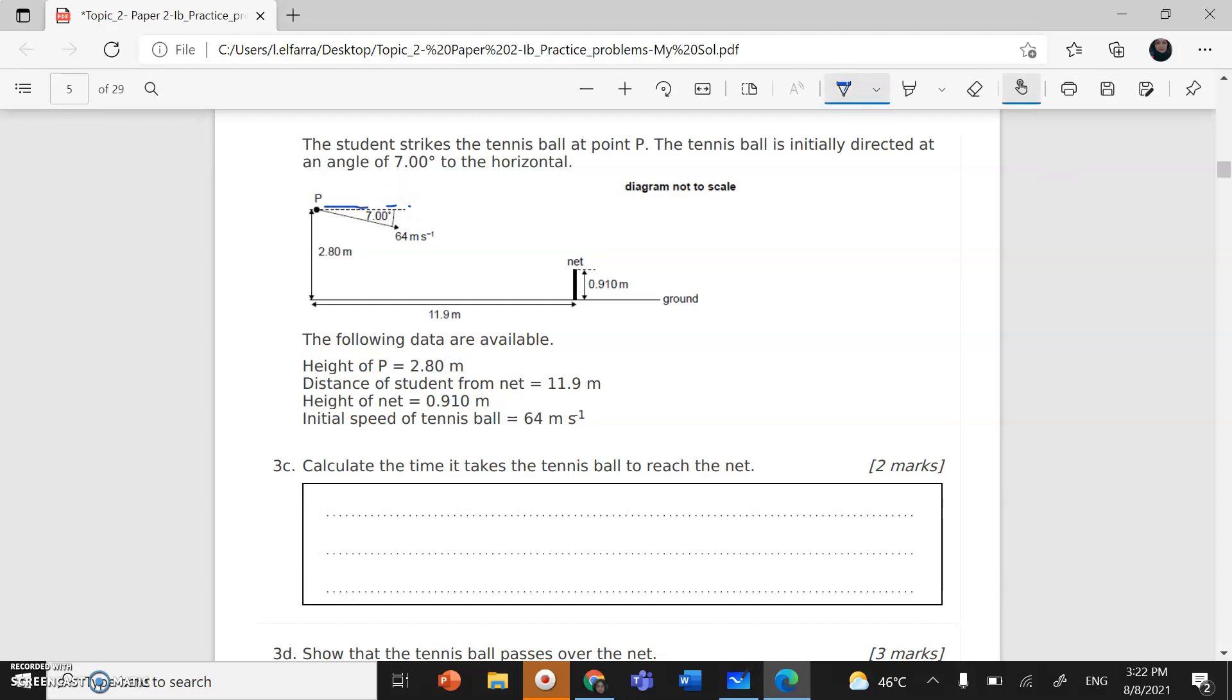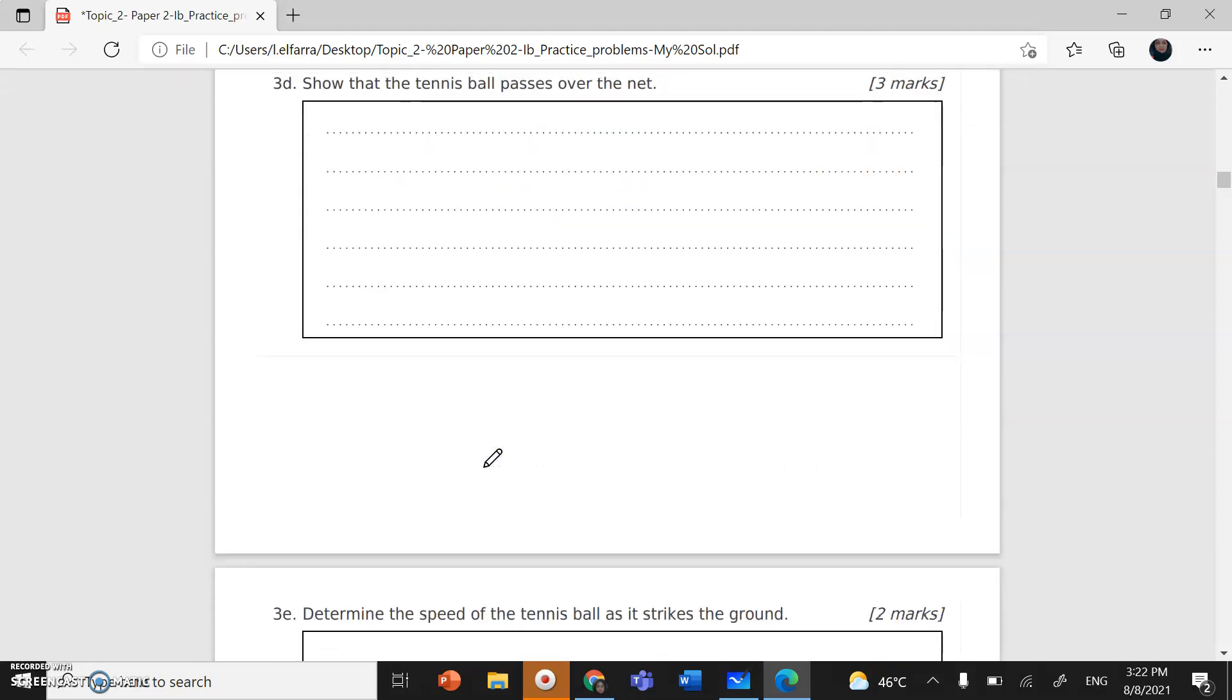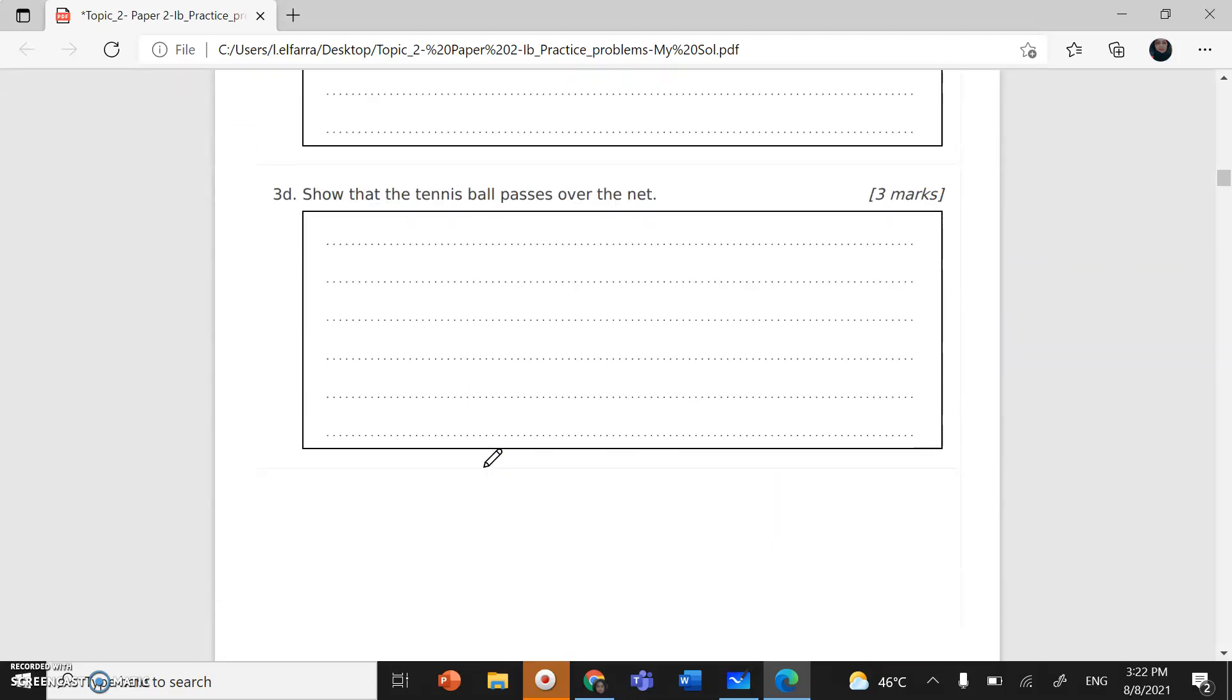This dashed line is the horizontal. Okay, we reach till D.